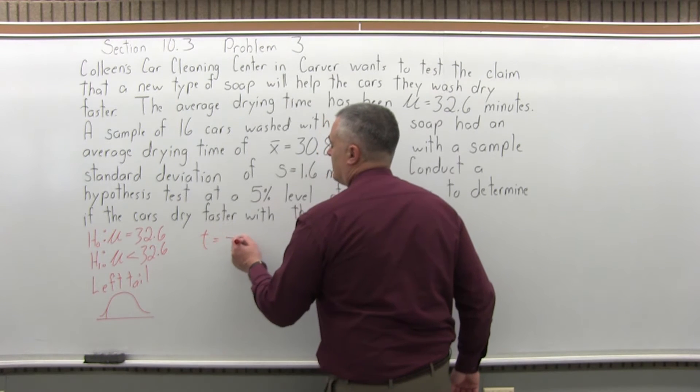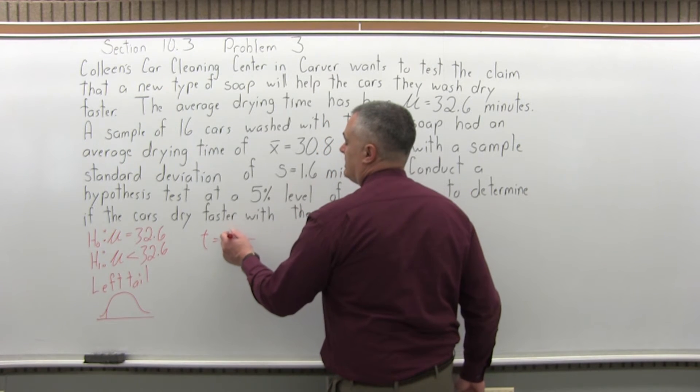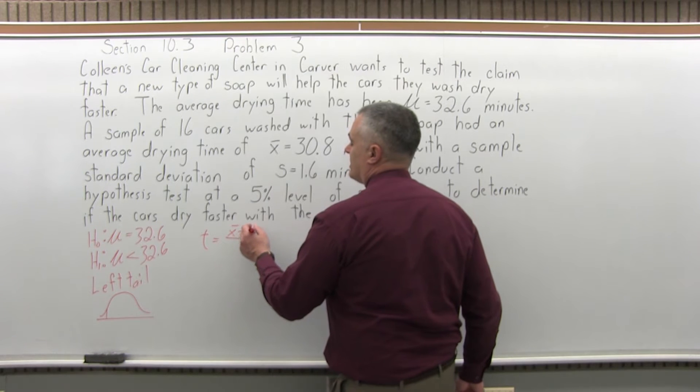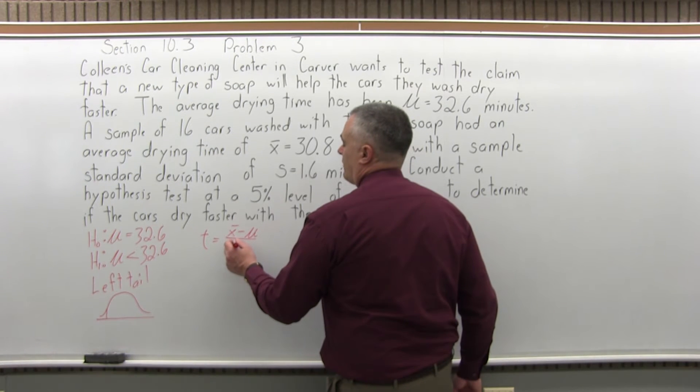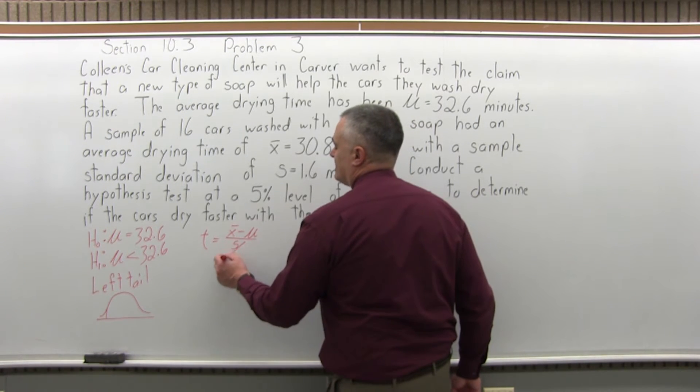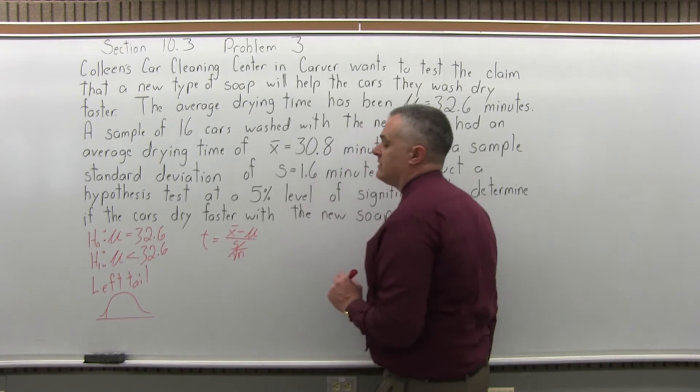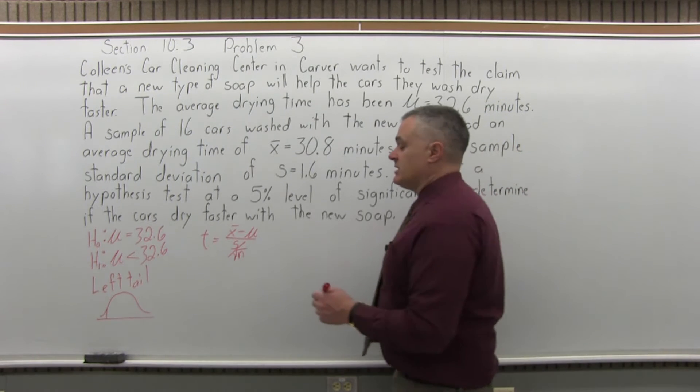The formula is almost the same. So, t equals x bar minus mu over s divided by square root of n. So, I'll fill in that formula and do the computation.